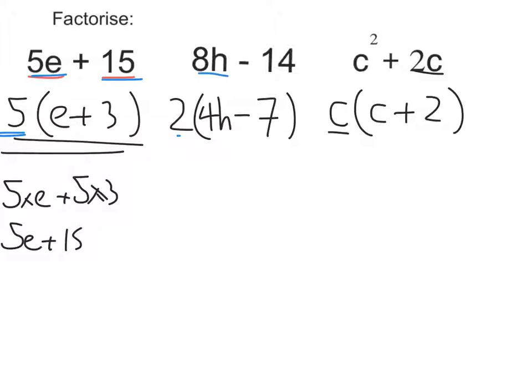Let's check that one. If I expand it out, I'm going to get c times c plus 2 times c. Well, c times c is c squared. 2 times c is 2c. So I do get my question. So my answer to this one is c, brackets, c plus 2, close brackets.